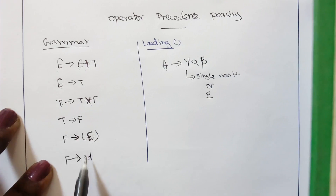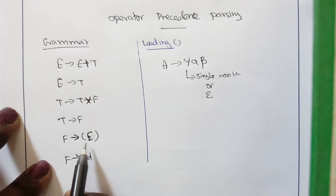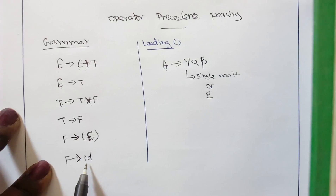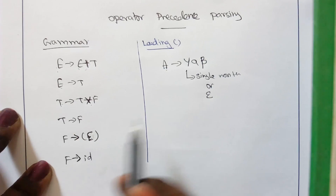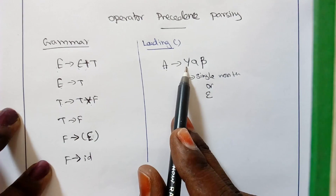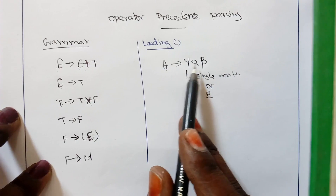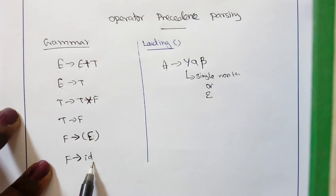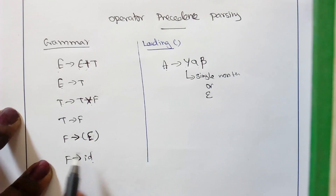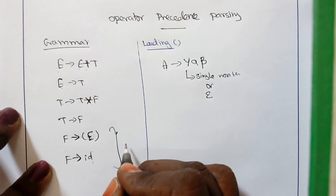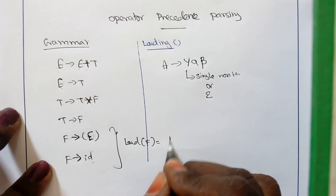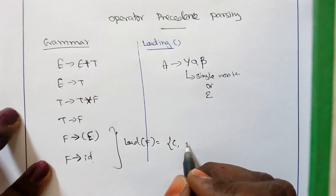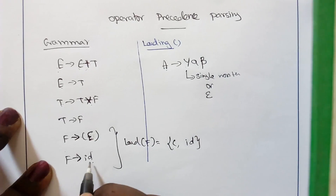For the productions of F, both start with a terminal symbol. When a production starts with a terminal symbol — meaning there is no leading non-terminal, i.e., Y is epsilon — we have to add that terminal symbol to LEAD of F. So F has two different productions: one starts with open bracket and one starts with id, so LEAD of F equals {open bracket, id}.